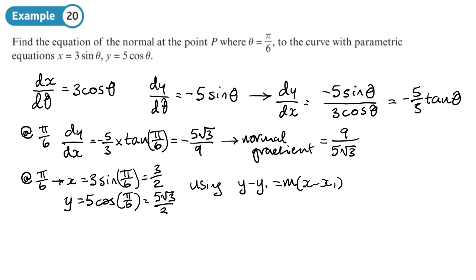So we're going to be using y minus y1 equals m times x minus x1. So y minus 5 root 3 over 2 equals m, which is 9 over 5 root 3, times x minus 3 over 2. Now the question doesn't say anything about the form they want the answer left in, so what we've just written down there is fine as a final answer unless the question says they want it written in a particular form.